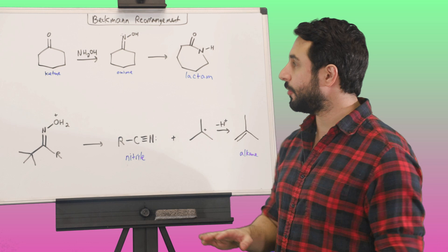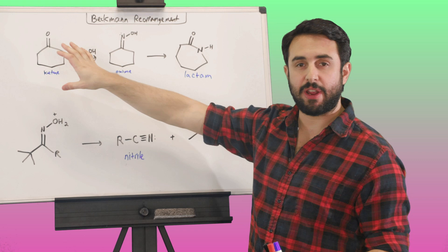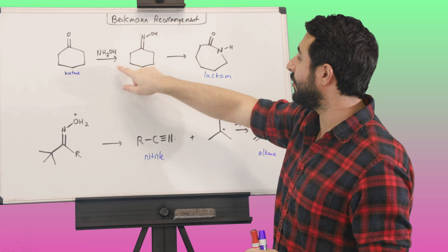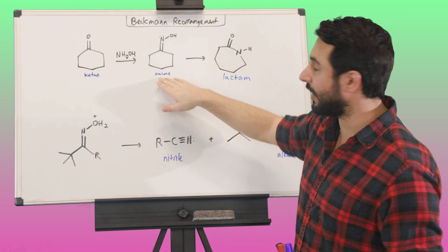Let's just look at two more things real quick, with the Beckman rearrangement. Let's just take a look at a cyclic substrate, it's basically the same thing, but it's just a little bit interesting. We've got cyclohexanone, again we're going to do the same thing, react with the same material, and we're going to get our oxime, just like before. But, then what's going to happen after the rearrangement...